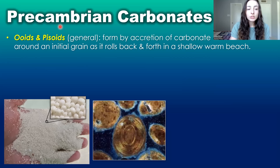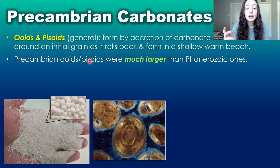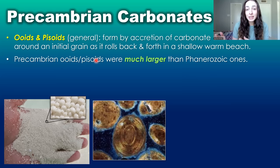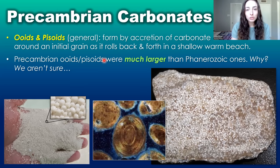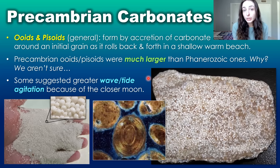The first of these carbonate grain types is ooids and pezoids. These are formed by accretion of calcium carbonate around an initial grain as it rolls back and forth in a shallow warm beach environment. Precambrian ooids and pezoids were much larger than Phanerozoic ones — the only difference between the two terms is size, with ooids being smaller and pezoids being larger, though sometimes used interchangeably. Why they were larger in the Precambrian is not fully understood; one suggestion is greater wave and tidal influence because the moon was closer back then, though competing ideas remain.